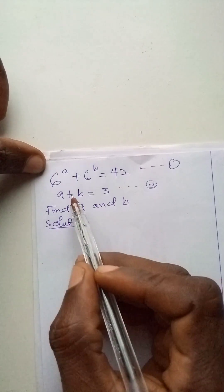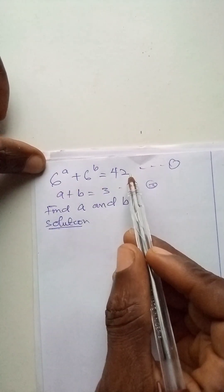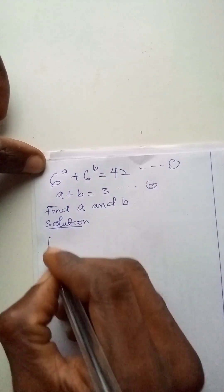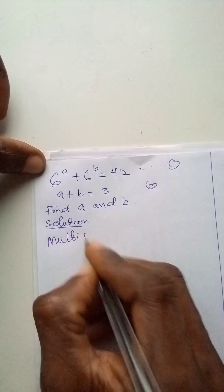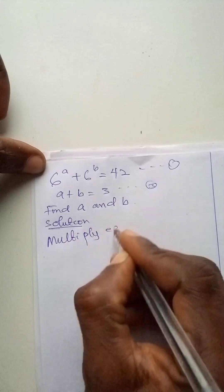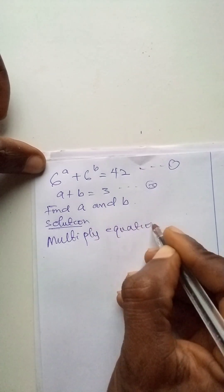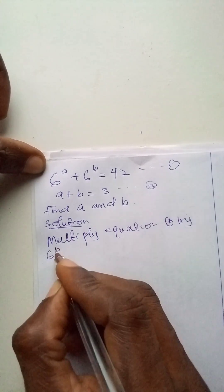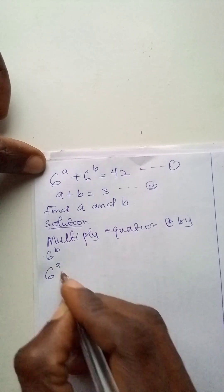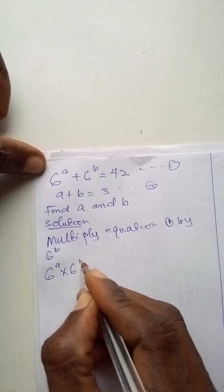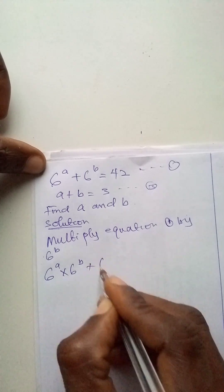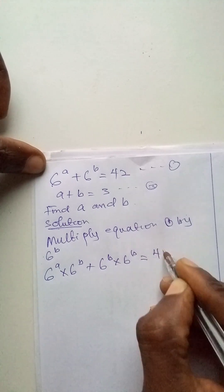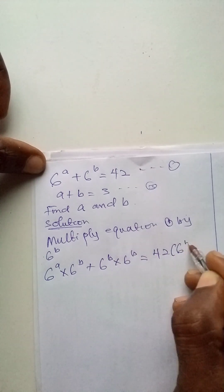Let's first of all multiply equation 1 by 6 raised to power A. So it becomes 6 raised to power A multiplied by 6 raised to power B, plus 6 raised to power B multiplied by 6 raised to power B, which gives us 42 times 6 raised to power B.